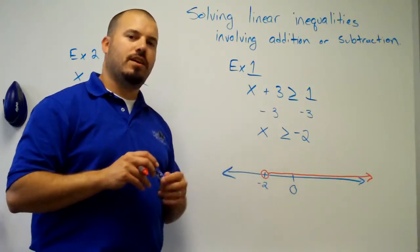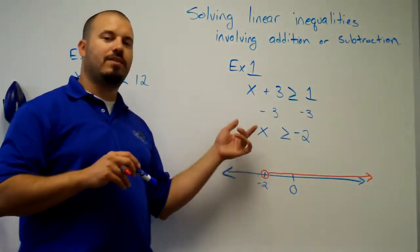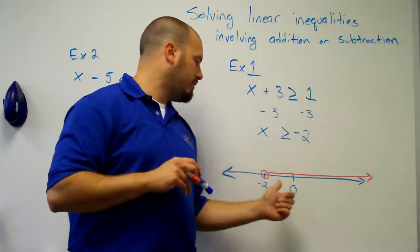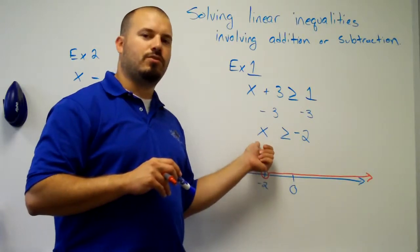It satisfies this inequality, which means it makes this inequality true. So, any of the points to the right on the number line or larger than negative 2 make this true.